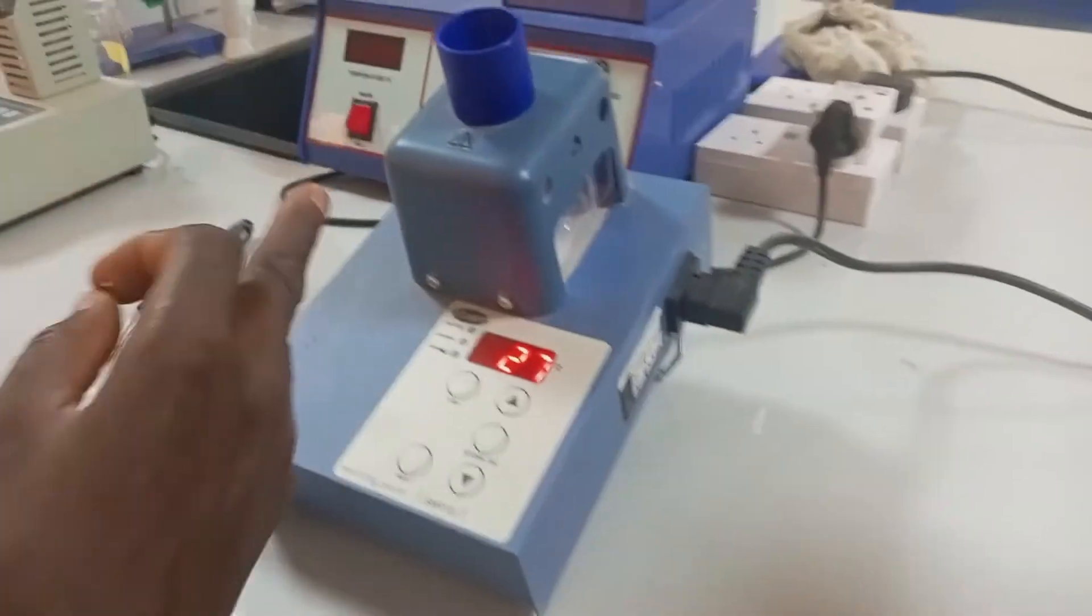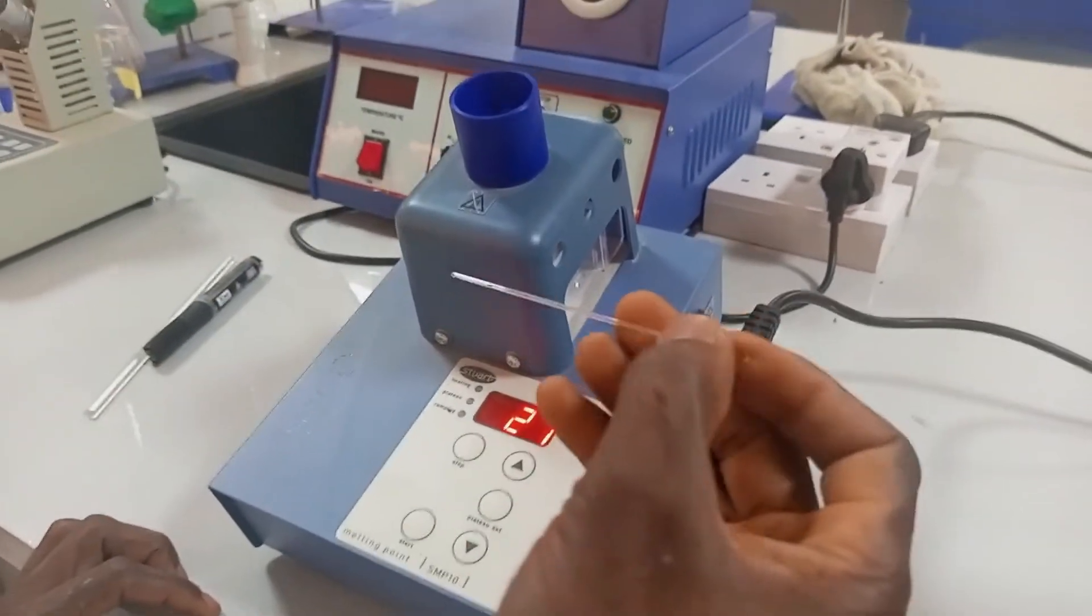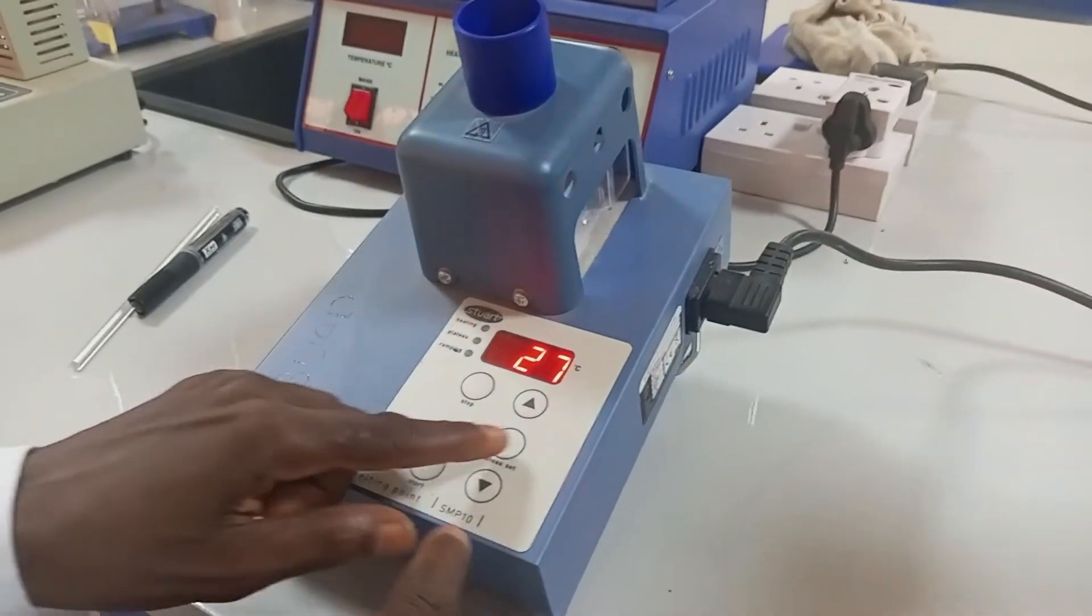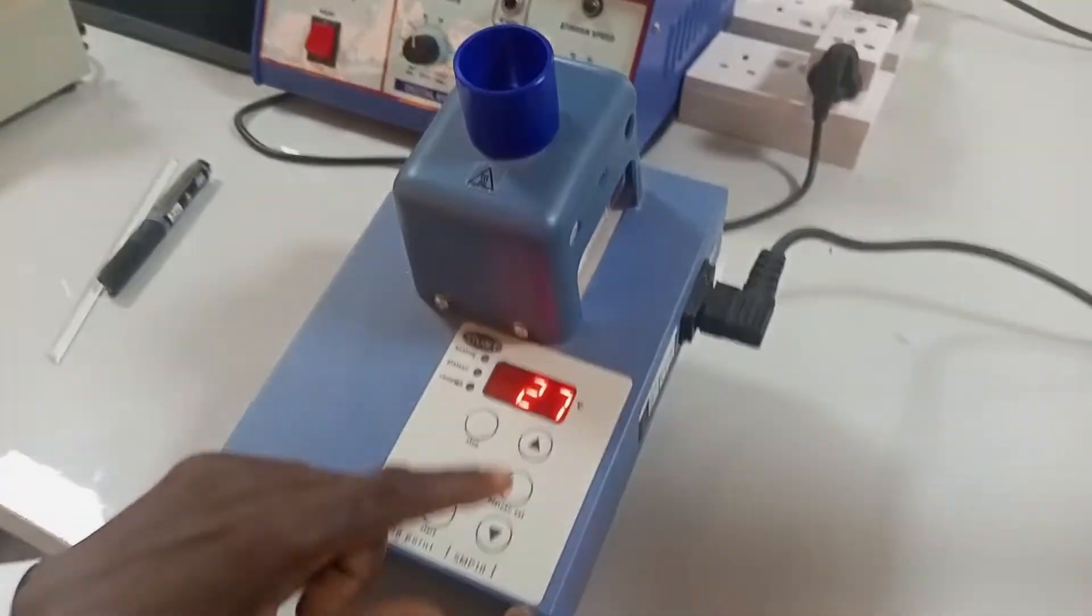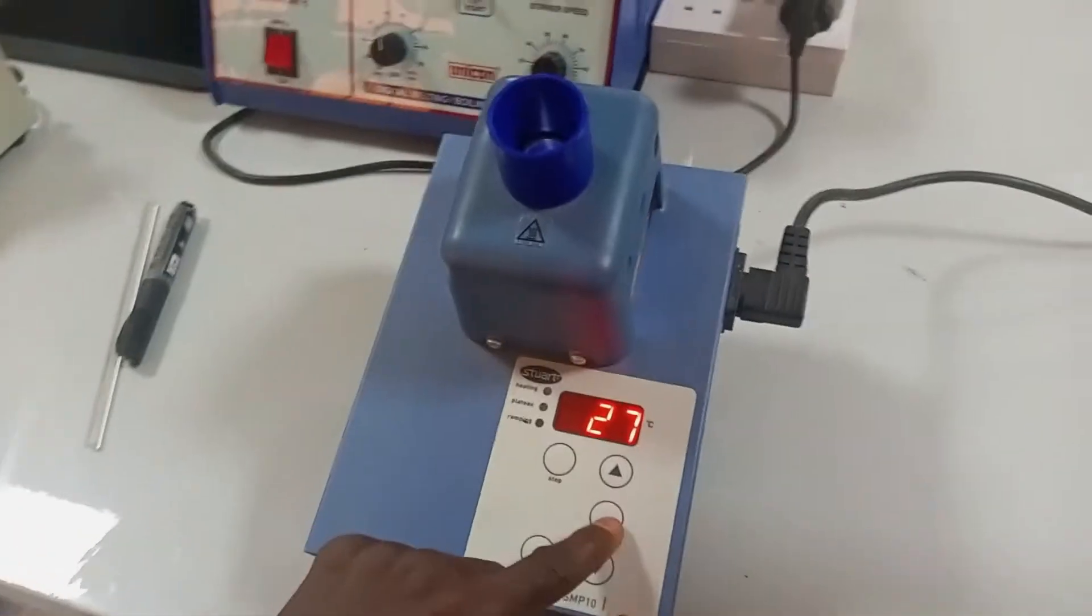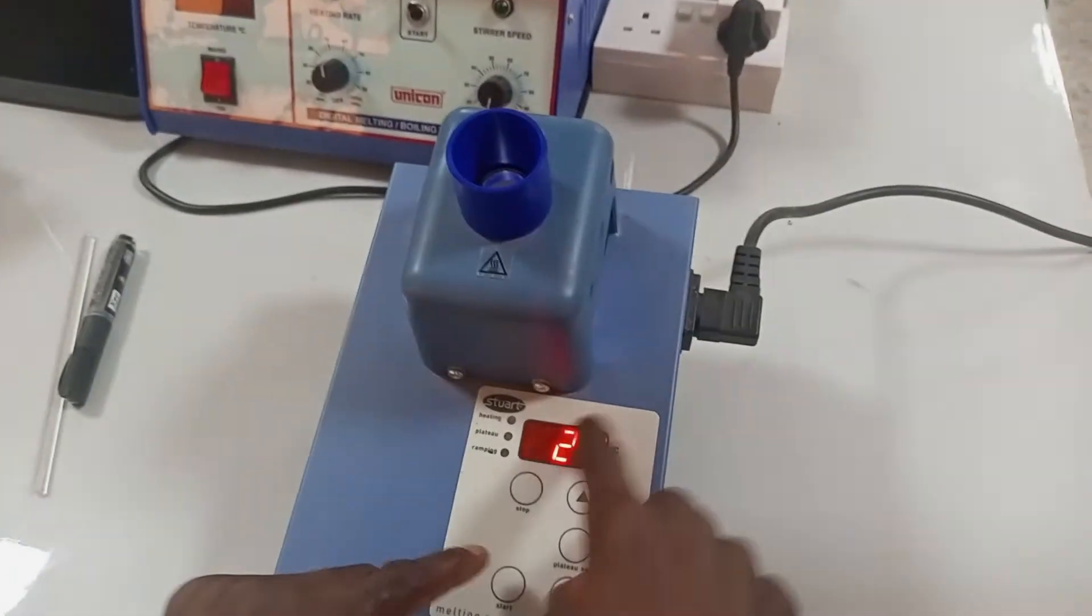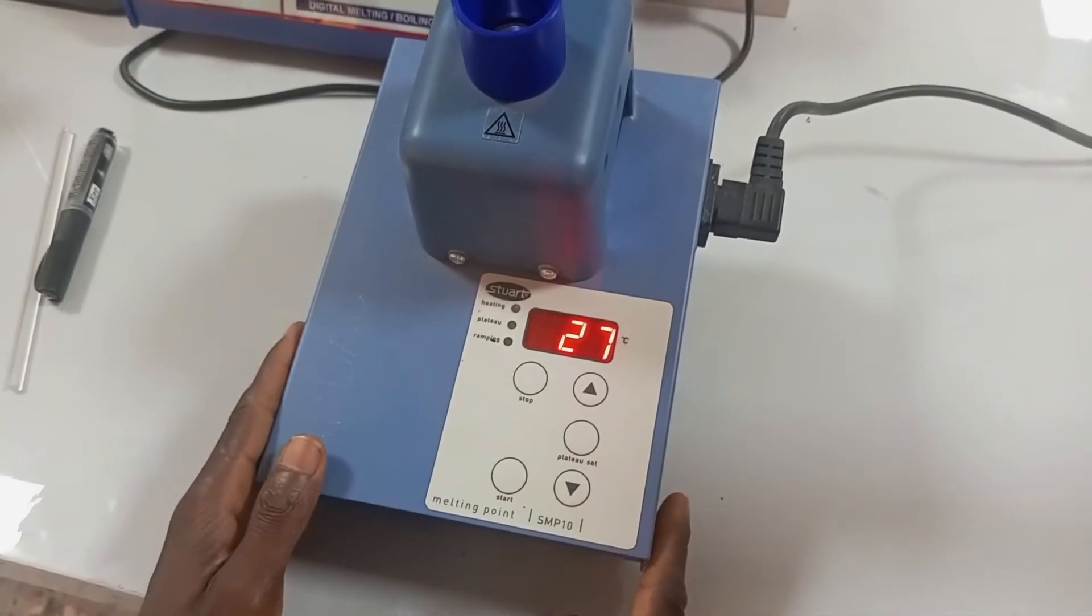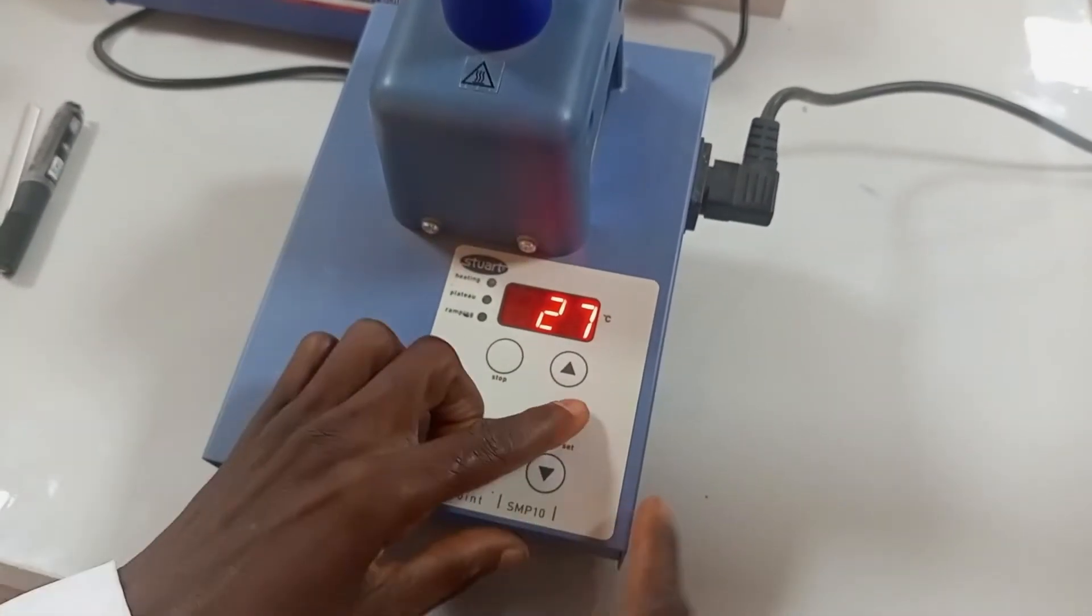The next thing is to determine the melting point of the loaded unknown organic compound. But before then, you have to set your melting point apparatus. This is showing that the temperature now is 27 degrees. The maximum temperature of this melting point apparatus is 300 degrees, of which we don't know the melting point of this compound.